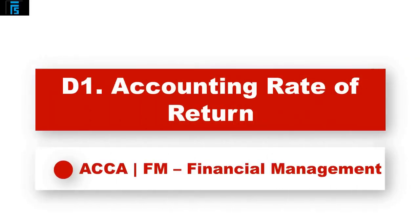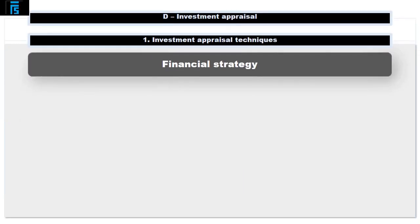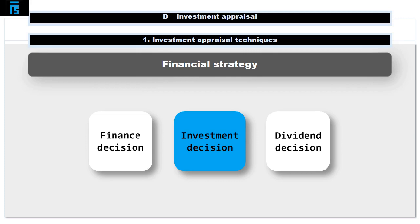We're now moving on to a major new topic: investment appraisal. This is highly examinable and is at the core of financial management. The financial strategy contains three key decisions: the finance decision — where do we get our money from? The investment decision — what do we spend it on? And the dividend decision — do we return our money to our investors or do we retain it to reinvest? During this part of the course we're focusing on the investment decision: what do we spend our money on?